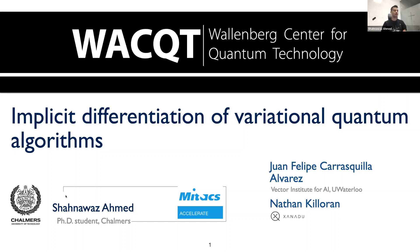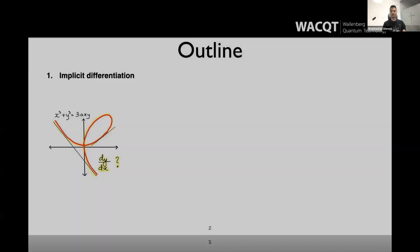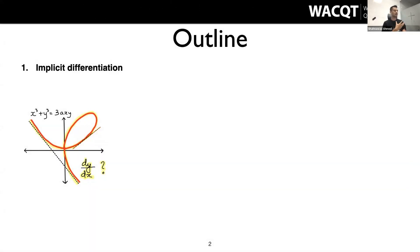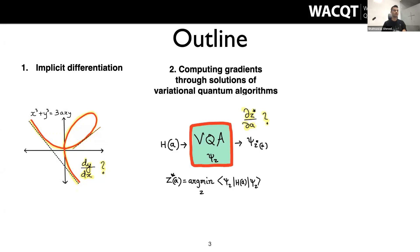The topic is implicit differentiation of variational quantum algorithms. Let's start way back — in the 1700s, there was a problem that Descartes gave to Fermat, and from that problem comes this idea of implicit differentiation, which almost everyone would have used at some point during university or even senior high school. I will discuss this idea and then how to apply it to compute gradients through variational quantum algorithms.